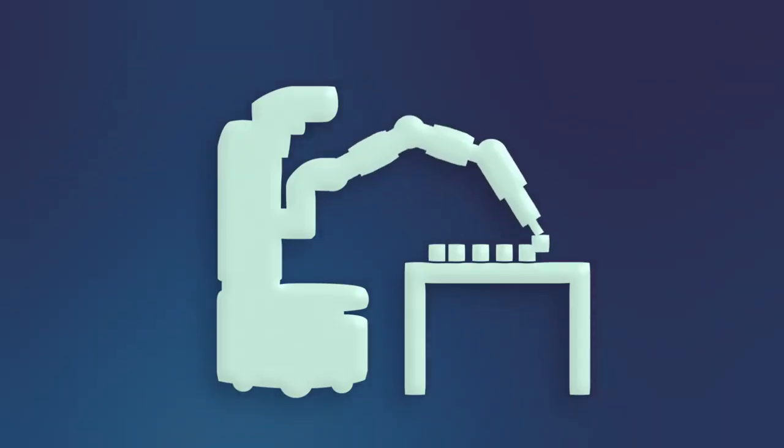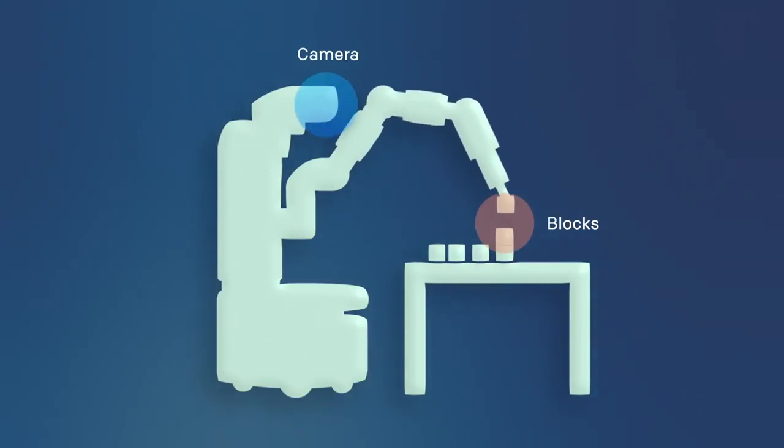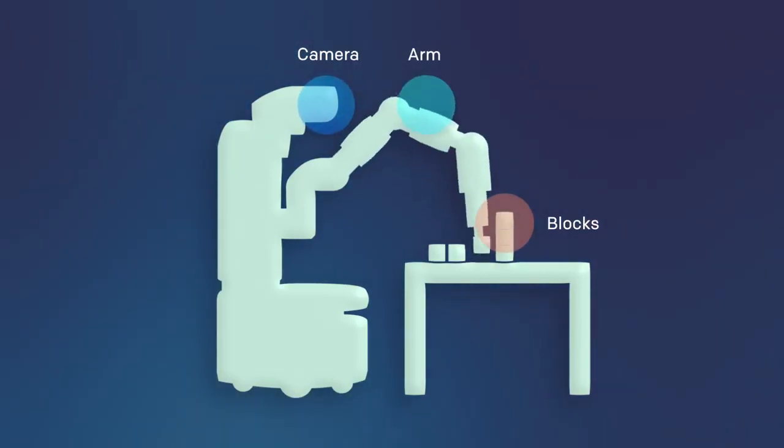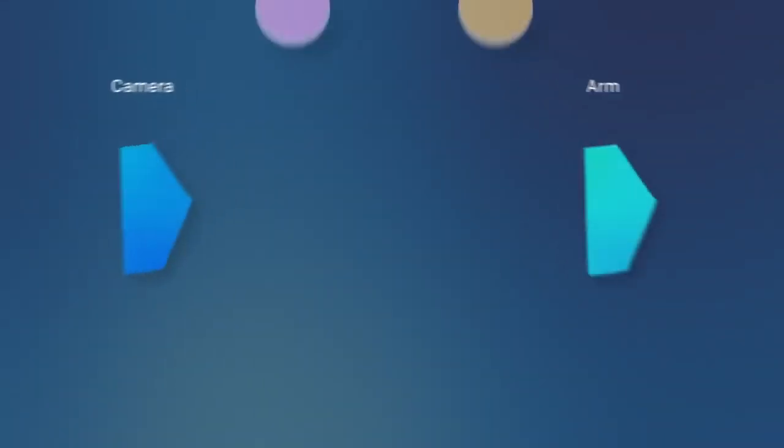Here's how our system works. The robot perceives the environment with its camera and manipulates the blocks with its arm. At its core, there are two neural networks working together.